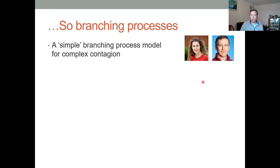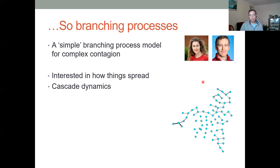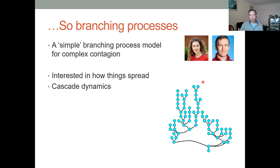What I'm going to be talking about is a simple branching process model for complex contagion on networks. By 'simple model' I mean more of a toy model. We'll work through some simple network topologies and multi-type branching process structures to give an indication of how we might extend this theory to encapsulate clustering on networks, which is a challenge for classical branching process theory. We're all networks people here, so we're interested in how things spread in actual networks — specifically cascade dynamics, how information propagates, and what drives individuals to adopt information.